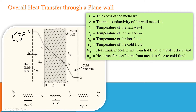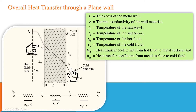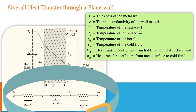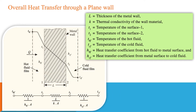T_HF and T_CF are the temperatures of the hot fluid and cold fluid respectively. T1 and T2 are the temperatures at one side and the other side of the metal plate. We are also considering the resistance. We have already derived the equation of resistance from the analogy between the thermal circuit and the electrical circuit. The heat transfer resistance for convection is 1 upon HA, and for conduction it is L upon KA, as derived in the previous lecture.